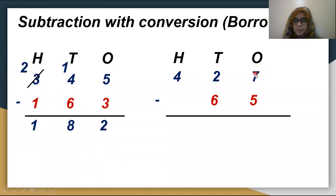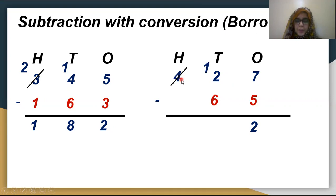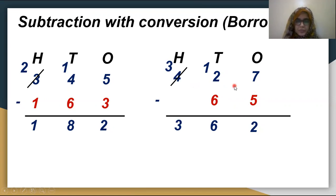Second example: 427 minus 65. 7 minus 5 is 2 — easy, since 7 is greater. But 2 minus 6 — we can't do this since 2 is smaller than 6, so we borrow from the hundreds. The hundreds digit becomes 3 and the tens become 12. 12 minus 6 is 6, and 3 stays as is. The answer is 362.